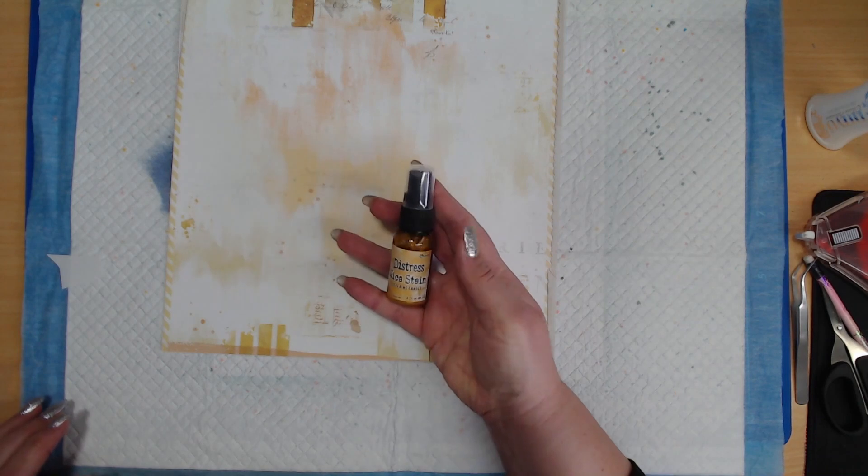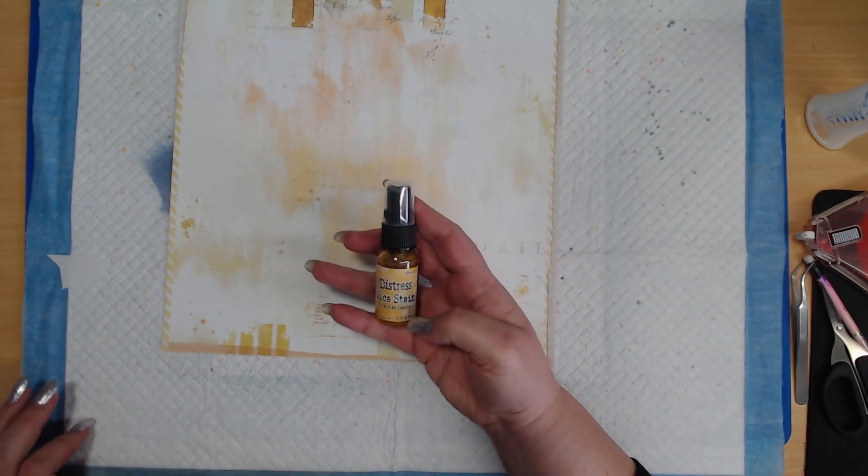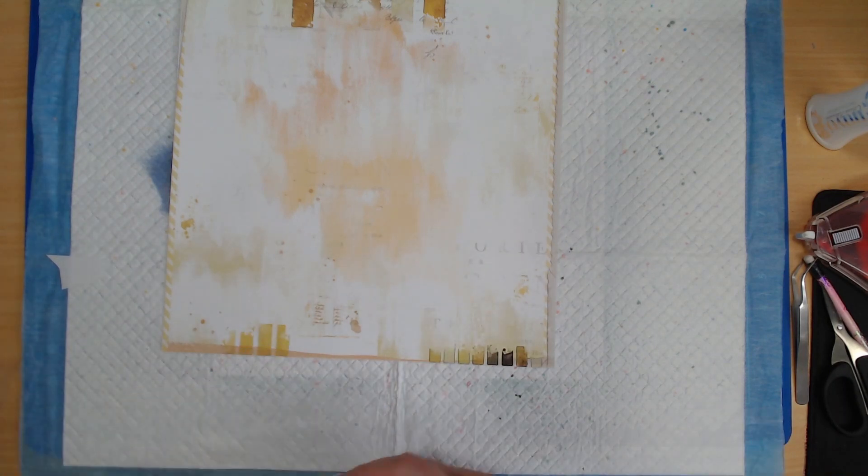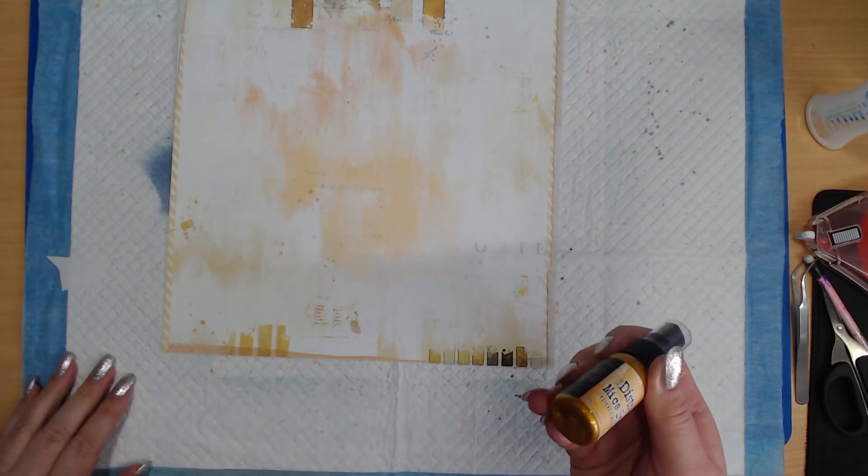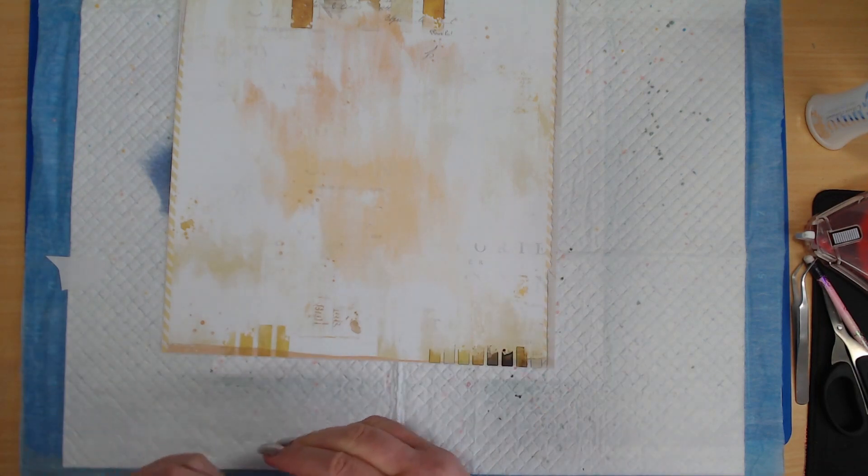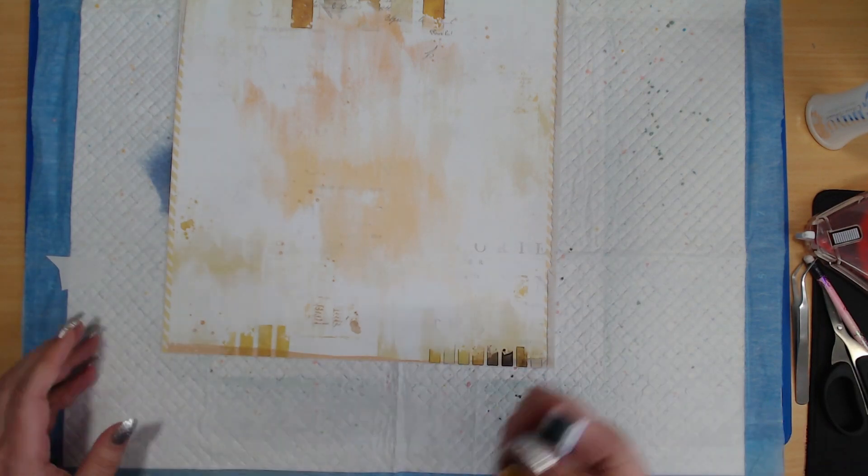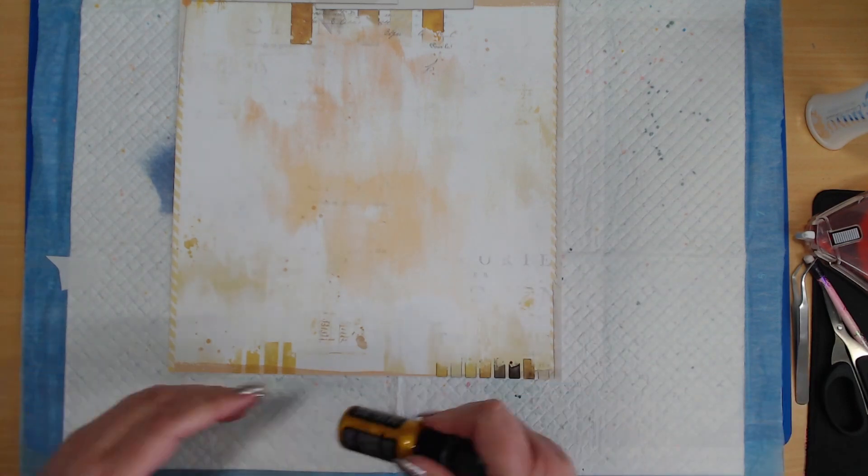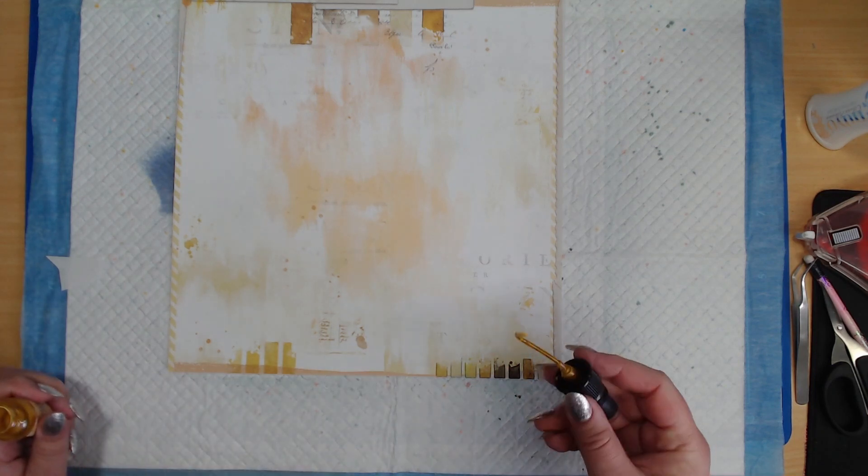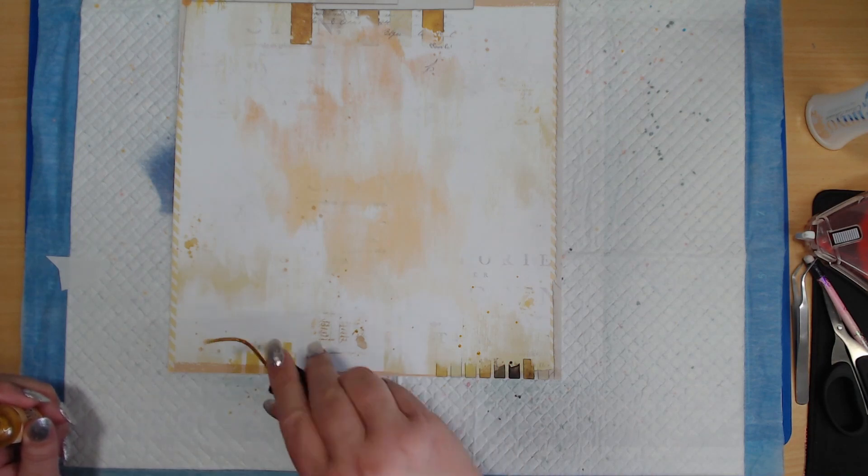Alright, so what I'm going to use is the Distress Mica Stain. This one's Flickering Candle. Now, these are Tim Holtz's limited collections, so he brings one out every Halloween and Christmas and maybe something else. But there are limited times, so you need to get them when they're available. Now, Crazy Craft Obsession doesn't have this particular one, but they have one which is in the Halloween set three, which would work just as well for this. And they've got such a beautiful glisten, I just love these.